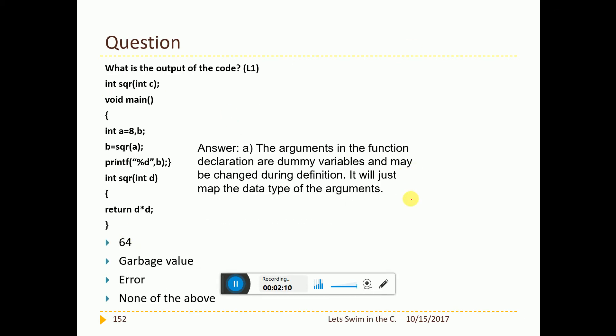Now the next question. See that I have int square int c. This is the function prototype. And B equal to square of A. The function definition is int square int d. Now this function prototype has got int c. The function definition has got int d. Now is there a problem? No, there is no problem. Both are to be there. That's it. It can be changed in the definition. So what will be the output? Simple. A is passed. A is nothing but 8. So 8 into 8 will be 64. 64 is the output.